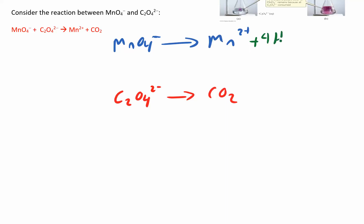Balance the oxygens by adding water: I have four oxygens on the left, so I add four waters on the right. When I added the water, I also added hydrogens, so now I balance the hydrogens by adding H+. Four waters times two hydrogens each gives eight hydrogens, so I add eight H+ on the left side.